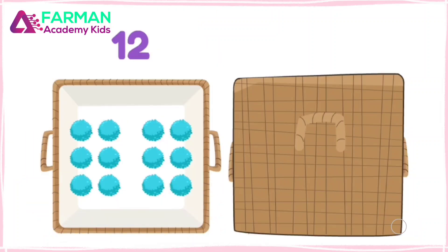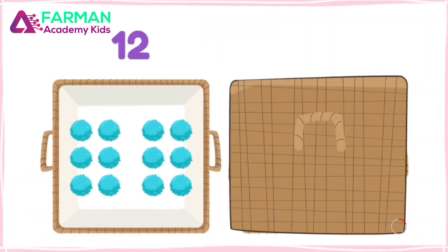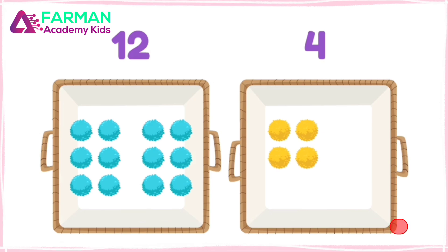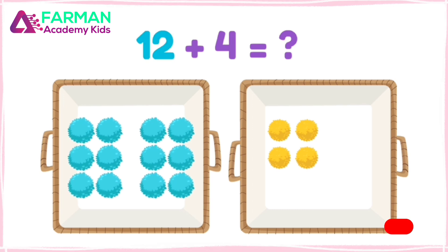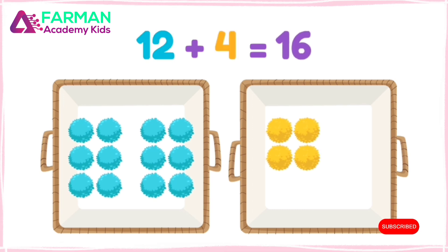There are 12 blue pom-poms in this container, and 4 yellow ones in this container. How many pom-poms are there altogether? 12 plus 4 is 16!